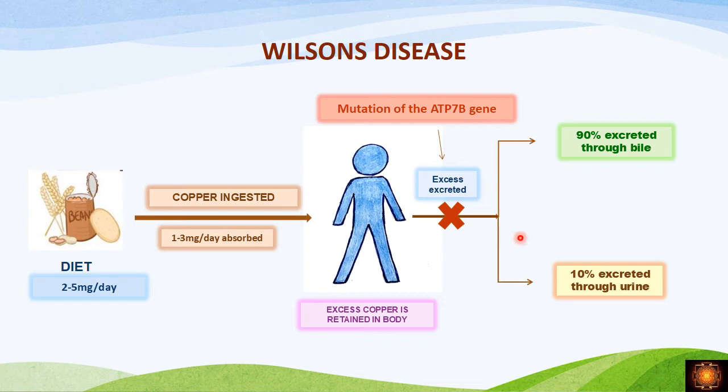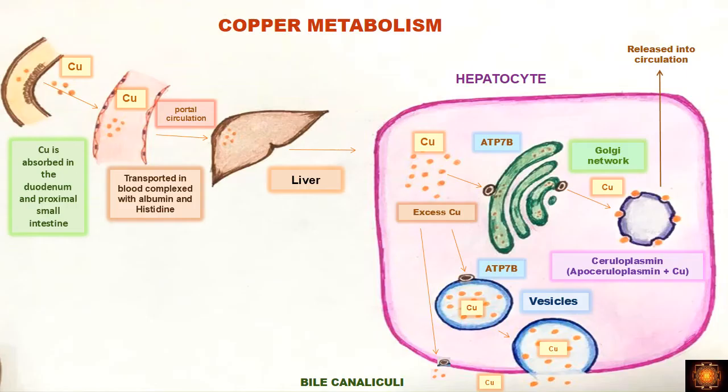In Wilson's disease, ingestion and absorption are normal, but we have a mutation in the ATP7B gene which affects the excretion of excess copper. So whatever copper is ingested is accumulating in the body because it cannot be excreted out through the bile or through the urine.